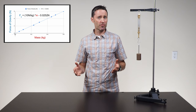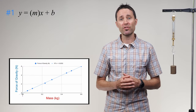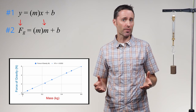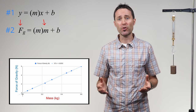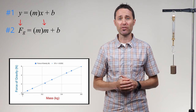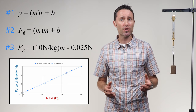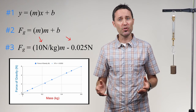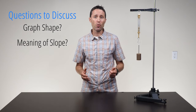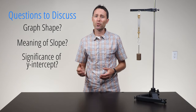When students first learn to write an equation from a linear fit, it is helpful for them to write out each of the three steps. Step one: write the general slope-intercept form of a line, y equals m times x plus b. Step two: replace y and x in the general equation with symbols that represent the variables graphed on each axis — in this lab, the letter m represents mass, and f sub g represents the size of the gravitational force. Step three: replace m and b with the numerical values and units of measure for the graph slope and y-intercept found using a linear fit. Ask each lab group to discuss the shape of their graph and the significance of both the slope and the y-intercept.